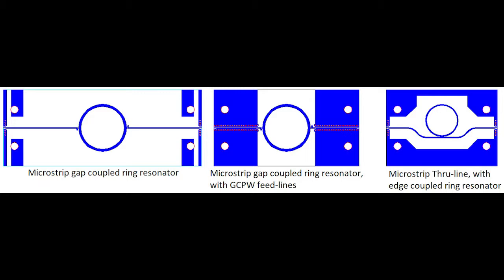To address this at higher frequencies, one option is to make the feed lines much shorter so their natural resonance moves to a higher frequency and doesn't disturb the ring. Another approach is the middle ring resonator shown, which is gap-coupled with feed lines using tightly coupled grounded coplanar waveguide. The tightly coupled grounded coplanar waveguide, if designed correctly, allows the ring resonator and feed lines not to resonate on their own and minimizes spurious modes, enabling testing at much higher, millimeter wave frequencies.